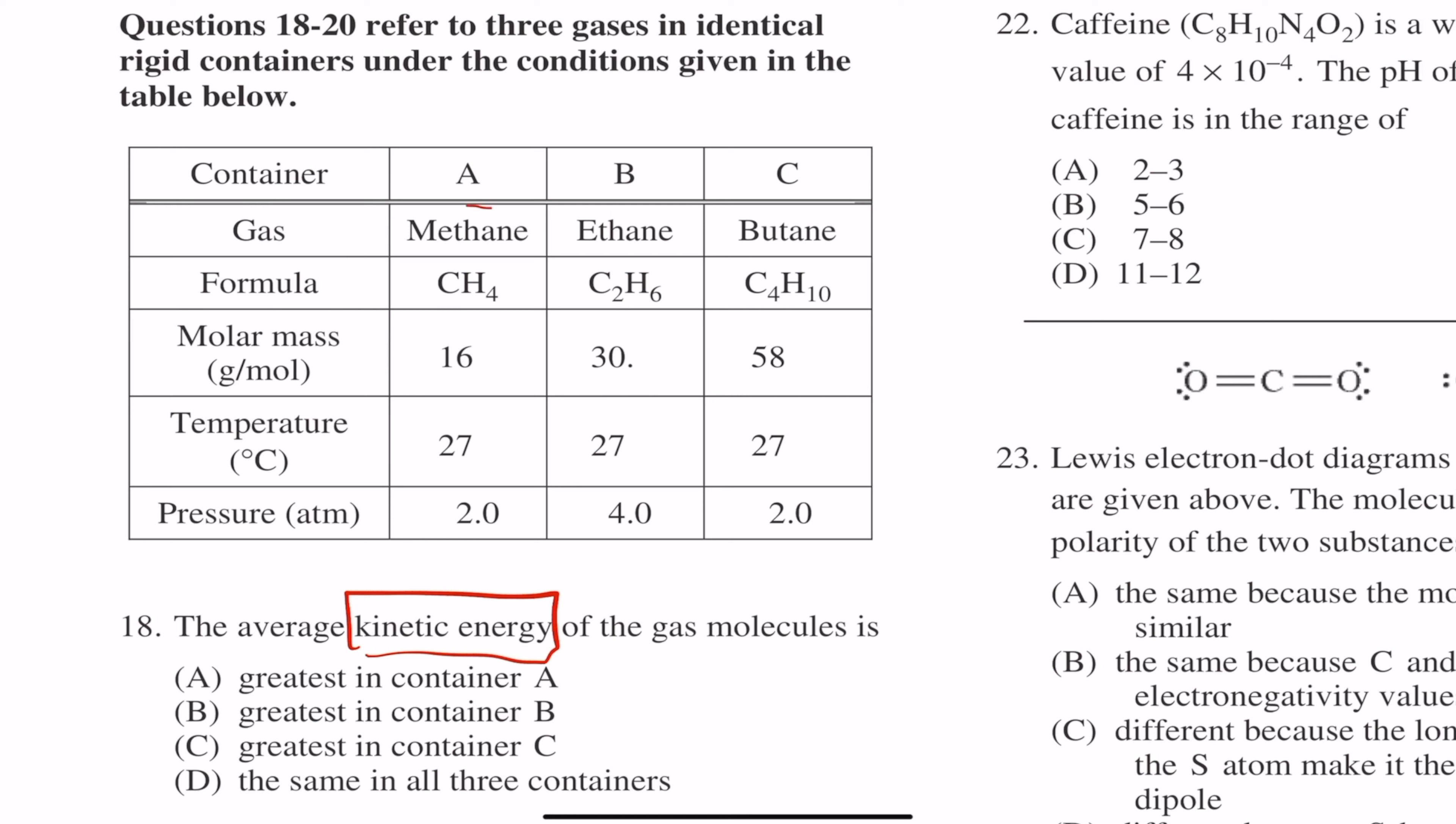And if you take a look at all these three containers, A, B, C, well, it's all at the same temperature of 27 degrees Celsius. Since they are at the same temperature, the average kinetic energy must all be the same. And that's why answer choice D, the same in all three containers, is correct.